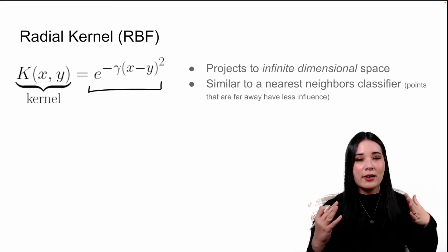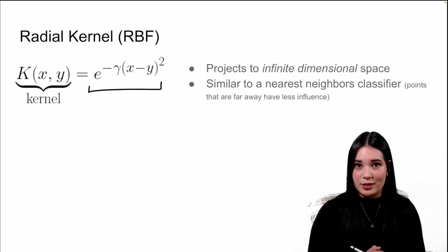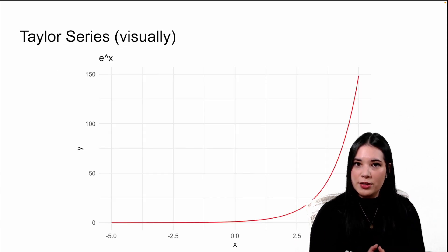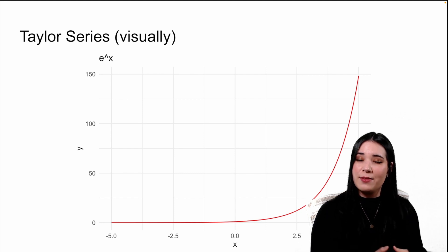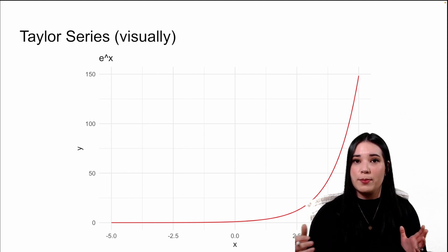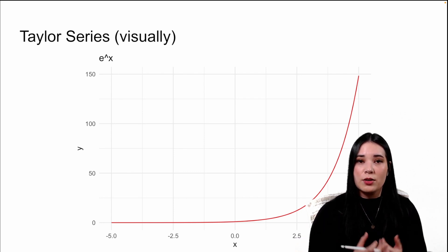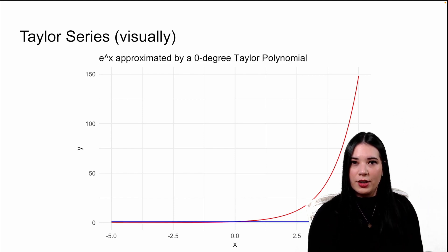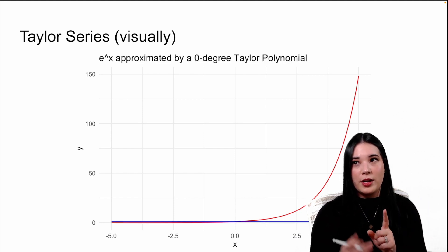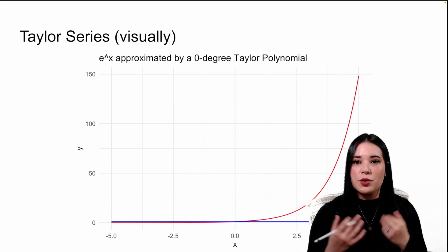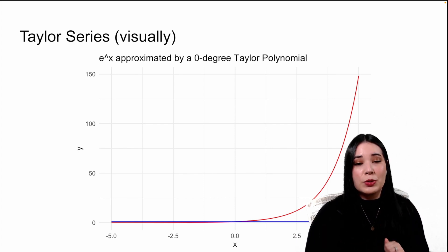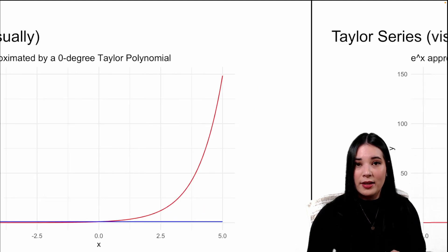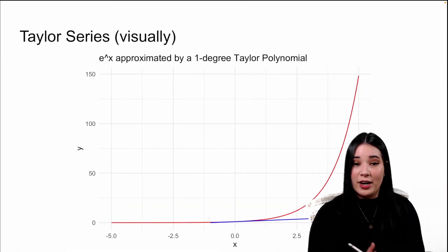In order to prove that the radial kernel is basically projecting into infinite dimensions, I need to take a step back and review Taylor series. Remember, Taylor series are a way to rewrite a function as an infinite sum of a bunch of different parts. For instance, here we have the function e to the x. Here we're using only the first of all of the infinite parts to approximate our function, and you can tell it's not doing too well.